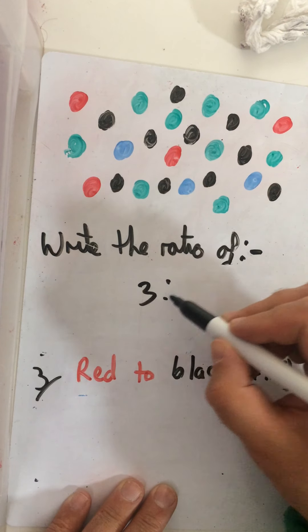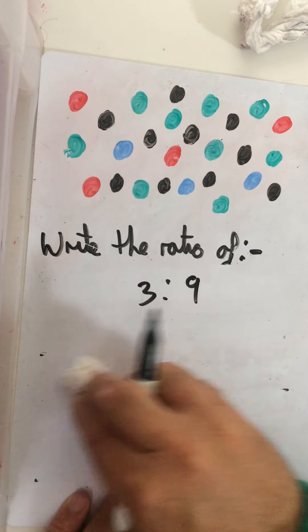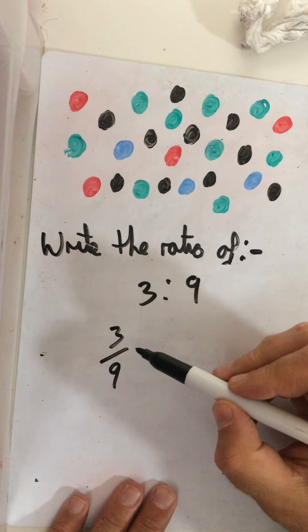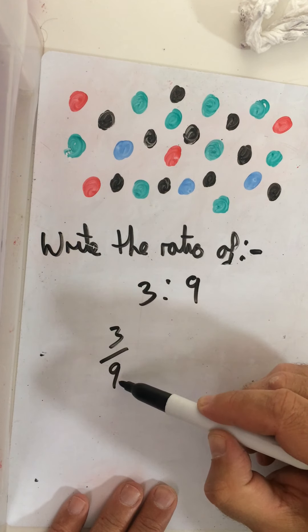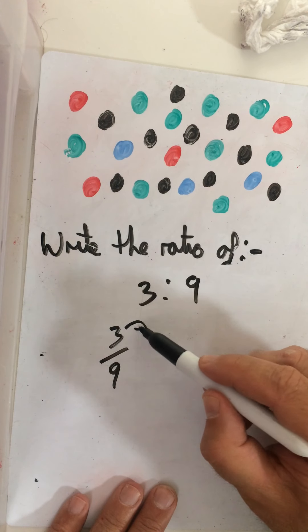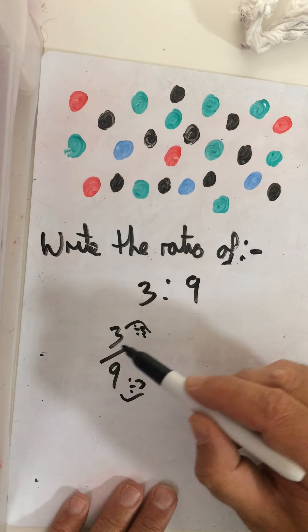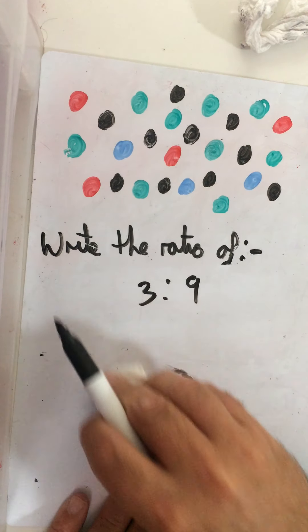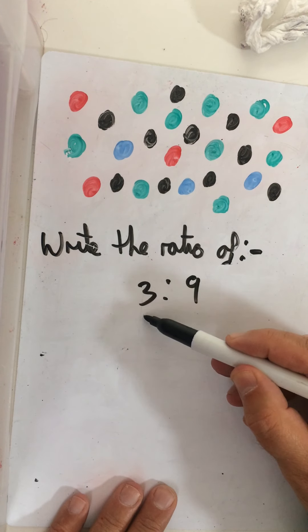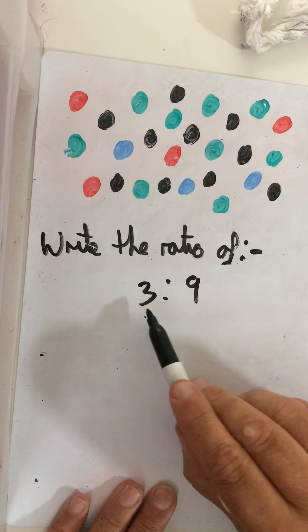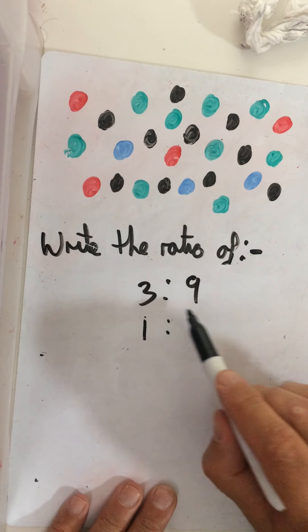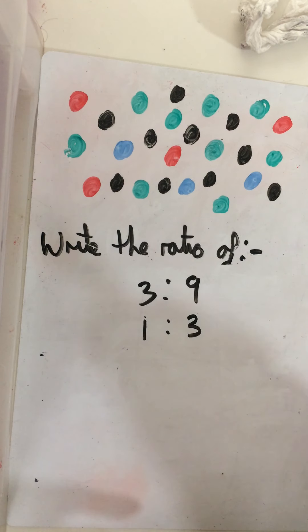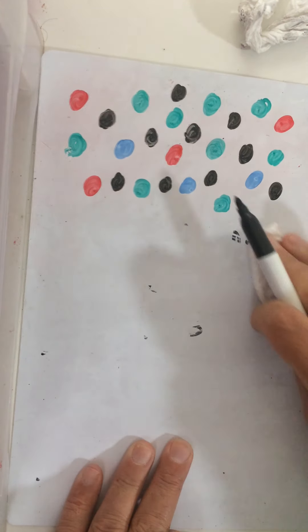The blue three to green nine — if I had the fraction three-ninths I'd want to simplify that. I'd ask myself what goes into both three and nine — three goes into them both. So I'm going to divide both by three: how many threes in three? One. How many threes in nine? Three. So it would be one-third as a fraction, and with the ratio I just write them underneath — three goes into three once, three goes into nine three times. We're going to practise simplifying ratios and then have a go ourselves.